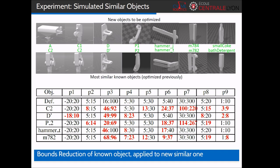Experiments were done first in simulation, with the optimization of 7 objects on top, and the corresponding data from the most similar object known, previously optimized, at the bottom. You can see in the table the default boundaries for each parameter on the first line, and the corresponding reduced boundaries for the similar object previously optimized, with the modifications in red.